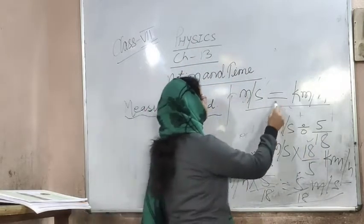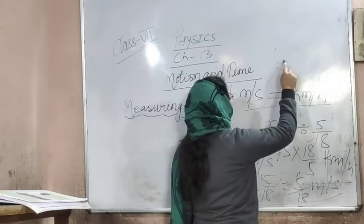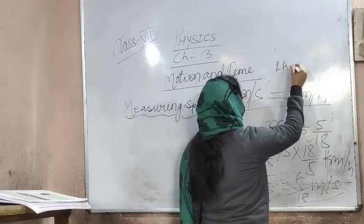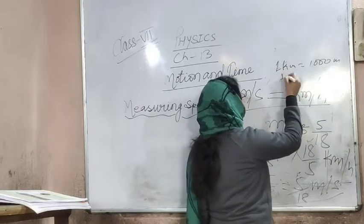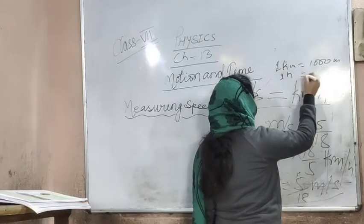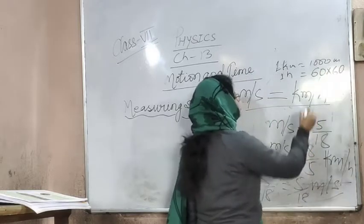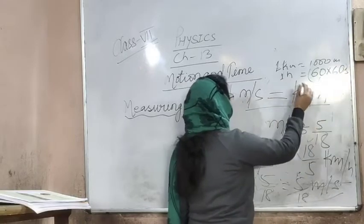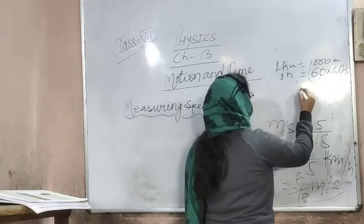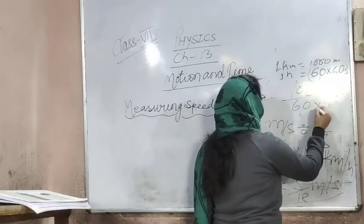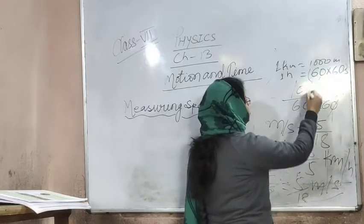You will know that 1 kilometer is equal to 1000 meters. In one hour, you have to convert to seconds. So 1 hour equals 60 into 60 seconds, which is 3600 seconds. Now what do you do? 1 km/h equals 1000 meters divided by 3600 seconds, which simplifies to 5/18 m/s. This is where the 5/18 comes from.